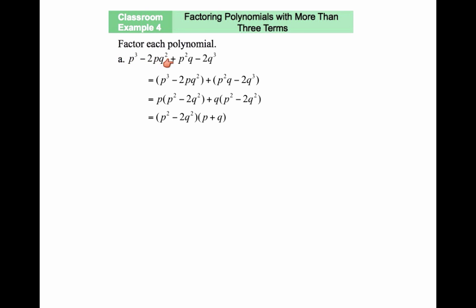Let's take a look at this example. Here we have p to the power of 3 minus 2pq squared plus p squared q minus 2q cubed. We have four terms and the greatest common factor among all these is 1. So we go with factor by grouping. We'll start with grouping the first two terms and the last two terms.